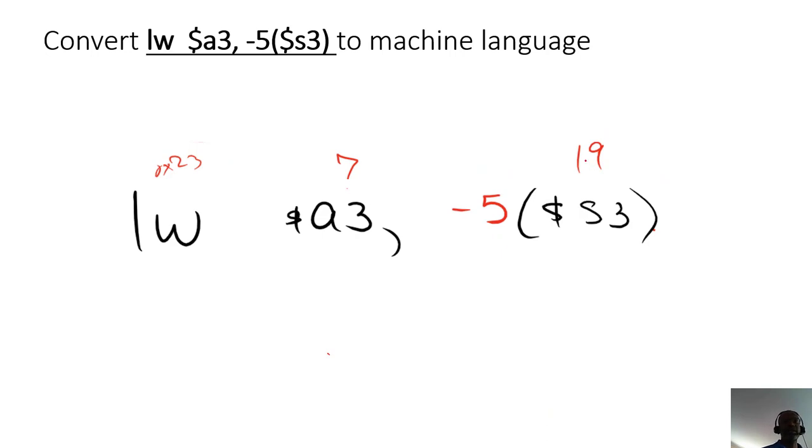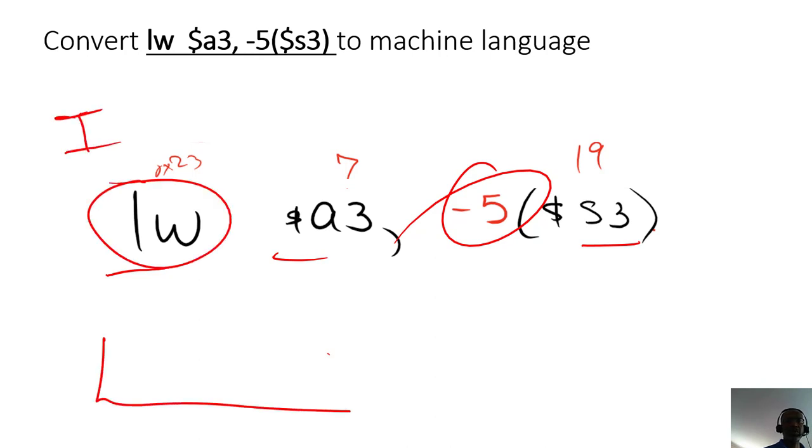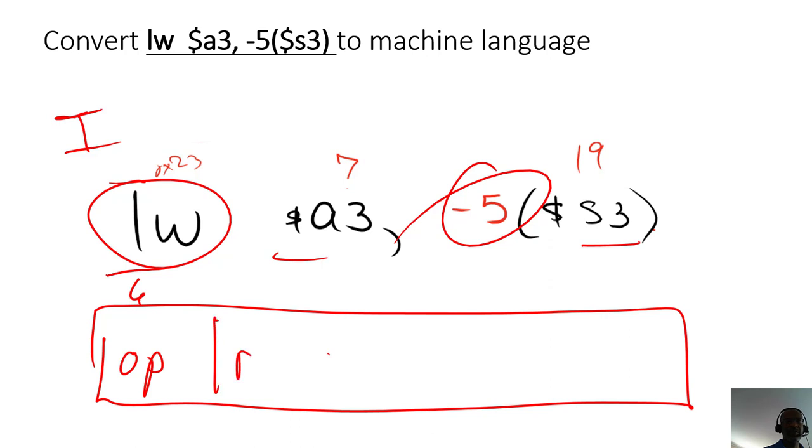So knowing these 1, 2, 3, and finally 4 pieces of information, and also knowing that load word is an I type instruction, we know that we need to take those pieces of information and put them into this 6-bit here, 6-bit field for the opcode, RS and RT would each be 5 bits.